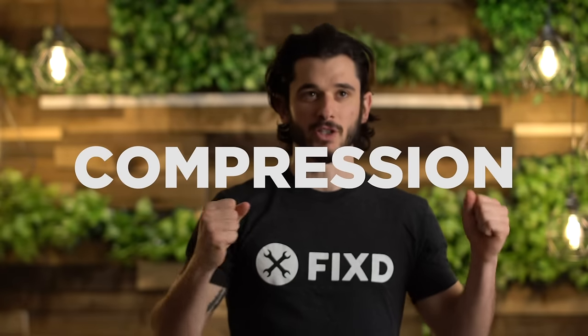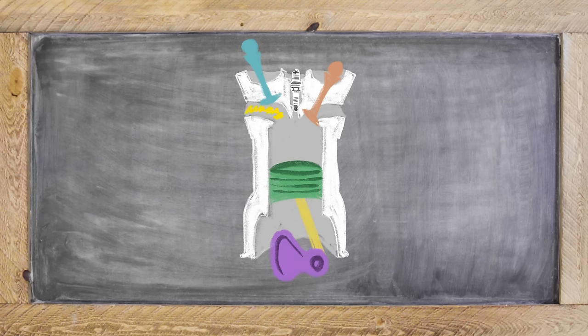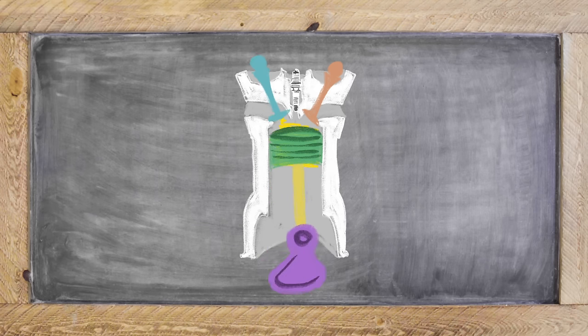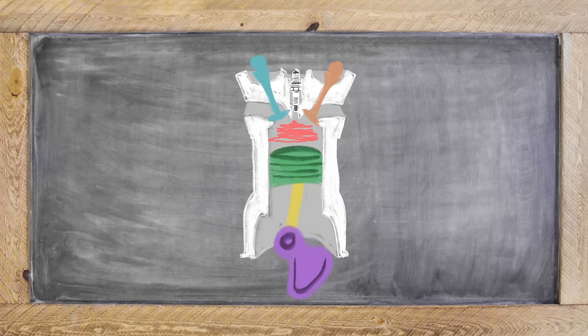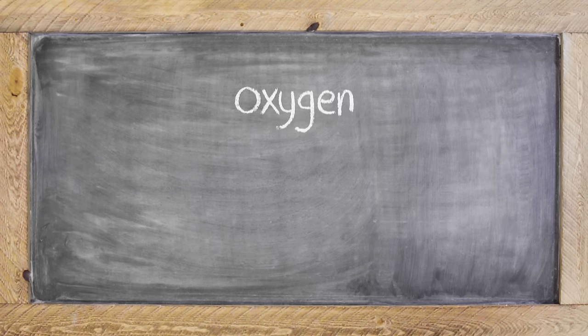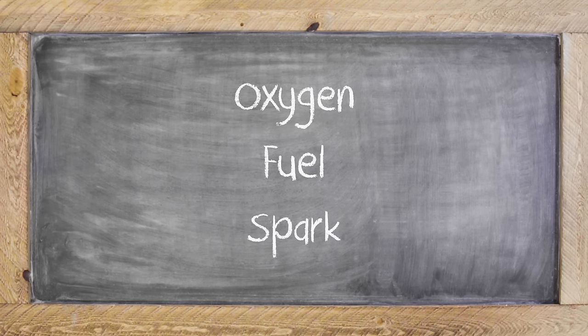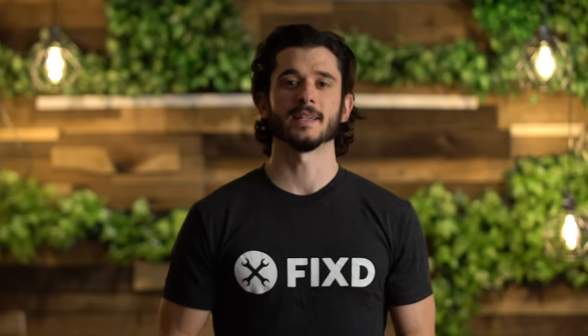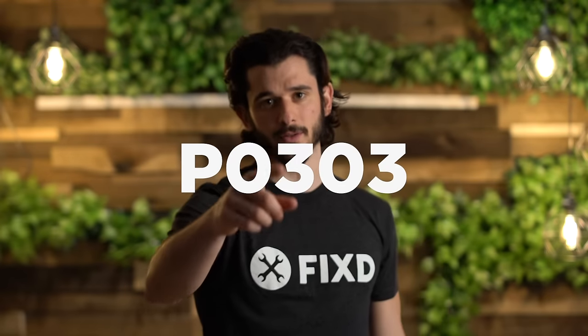The four strokes are intake, compression, power, and exhaust. Your cylinder intakes the fuel-oxygen mix, the piston compresses that mix, the spark plug ignites the mix to give power, and finally your cylinder opens to release the exhaust. Combustion requires three elements: oxygen, fuel, and spark. The intake stroke introduces oxygen and fuel, and the power stroke provides a spark. If any of these three components are off, the process gets out of sync and you get this error code.